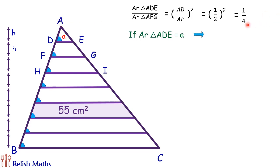Now if AFG is full 4a units and ADE is a, then the leftover area, this will be nothing but 3a units.